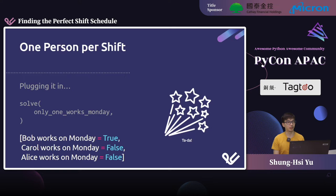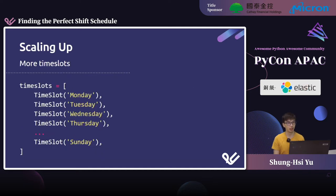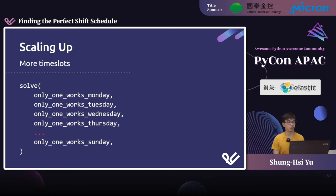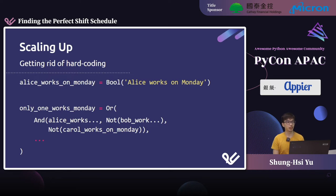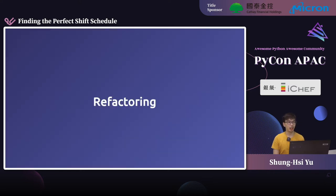I know it's quite a lot of work for such a simple case, but you can imagine how this can scale up. We could have much more time slots — instead of just Monday, we could have the whole week, giving the solver one rule for each day. But writing this out is getting quite verbose, so a better approach is to do it programmatically. However, there's quite a lot of hard coding currently — the name in the bool call and the variable names in the rule. This brings us to refactoring.